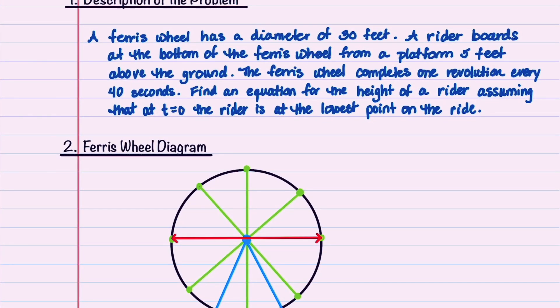In this problem, we're told that a Ferris wheel has a diameter of 30 feet. A rider boards at the bottom of the Ferris wheel from a platform 5 feet above the ground. The Ferris wheel completes one revolution every 40 seconds.